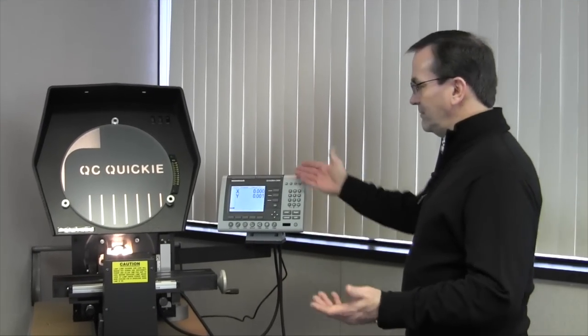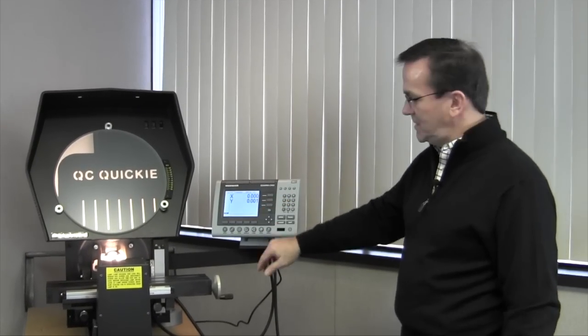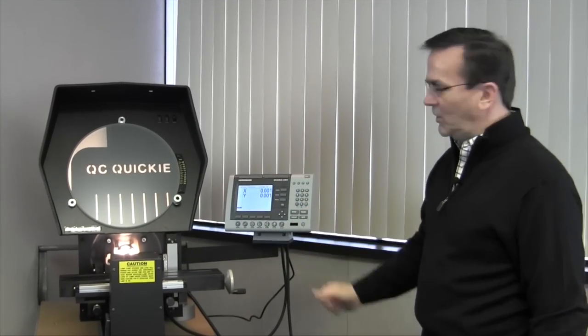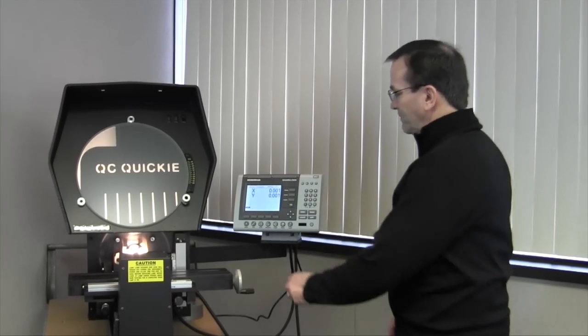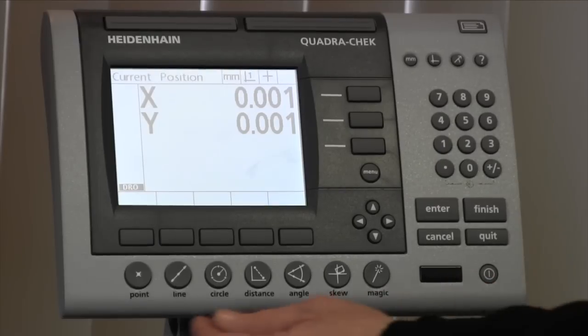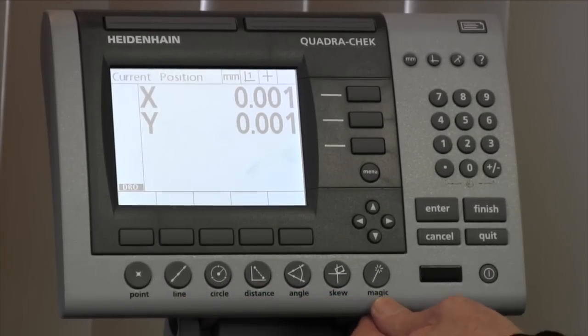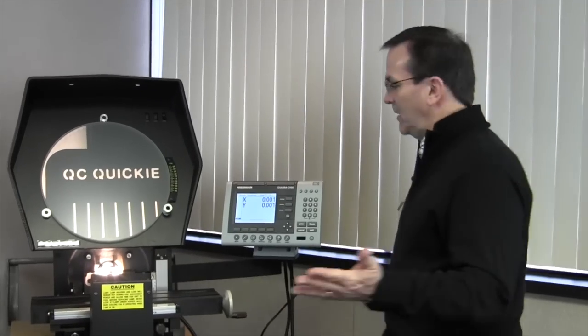So we're going to start out. This is a simple two-axis. It's got glass scales, X, Y, so you've got left and right and vertical. You got some buttons across the bottom here. You've got point, line, circle, distance, angle, skew, and magic, and we'll get into those.